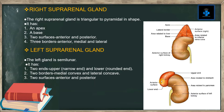The left suprarenal gland is semilunar in shape. It has two ends: the upper end is narrow and the lower end is rounded. It has two borders — medial and lateral — where the medial one is convex and the lateral one is concave, and two surfaces: anterior and posterior.